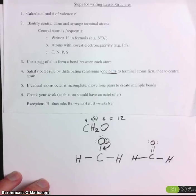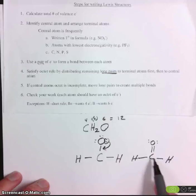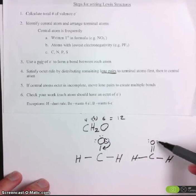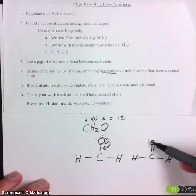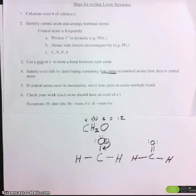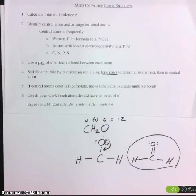Step number six, check to make sure each one has eight. Carbon has two, four, six, eight. Oxygen has two, four, six, and eight. And of course, the two hydrogens only want two. So this Lewis dot structure is complete.